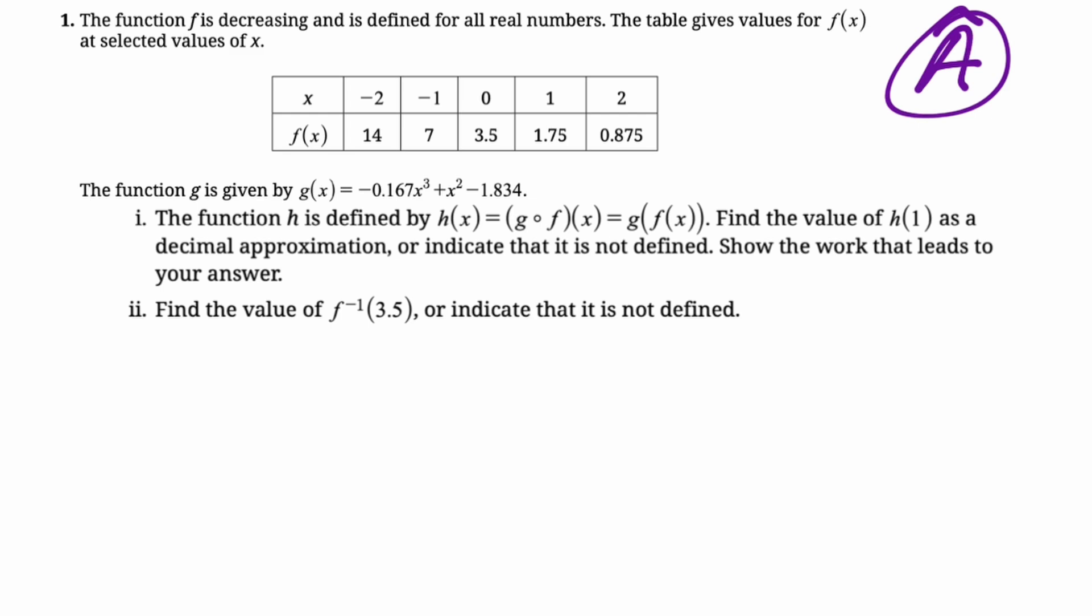Alright, number one, we want to find h(x) is g of f(x), and we need to find the value of h(1). So just take it a piece at a time and you'll be fine. So we're finding h(1), which is going to be g of f(1). f is determined by the table. So we go up to the table and we try to find f(1). f(1) is 1.75. Now we need to find g(1.75). So we're going to need a calculator or we're going to use Desmos.